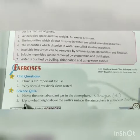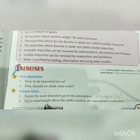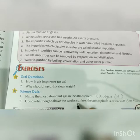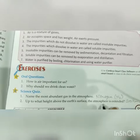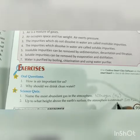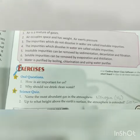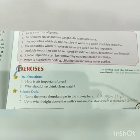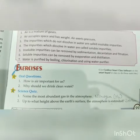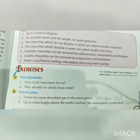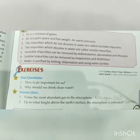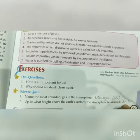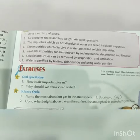Next: Up to what height above the earth's surface is the atmosphere extended? Earth की surface के ऊपर कितनी height तक atmosphere फैला हुआ है? The answer is 300 km.